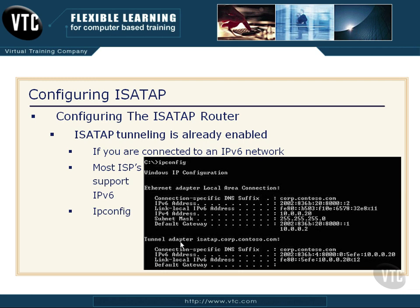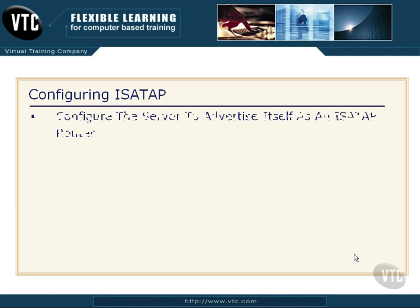If you go down just a little bit, you can see some IPv6 addressing, and you'll see tunnel adapter ISATAP with some domain information related to Active Directory. Right here is the IPv6 address. Notice on the ISATAP tunnel adapter you see the IPv6 prefix: 2002, 836B4, 8000, 0. But then this 5EFE is really the signature for ISATAP, followed by my actual IP address from the IPv4 setting. This sometimes shows as hexadecimal and won't look this way, so the signature you're looking for is this 5EFE. That's what it'll look like if you have it installed, working, and getting an IPv6 address.